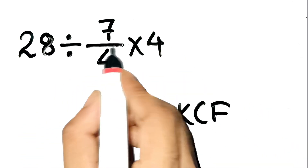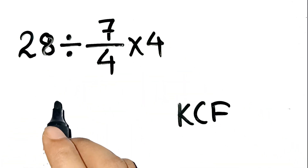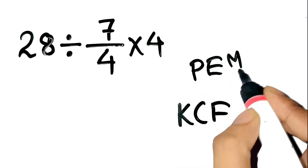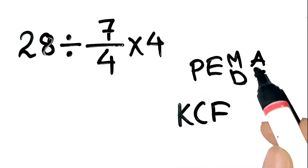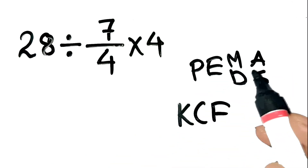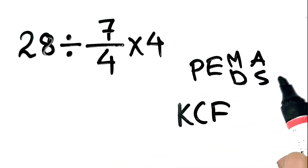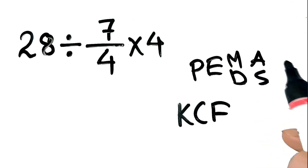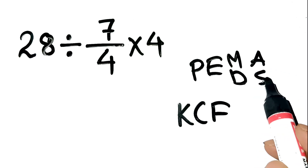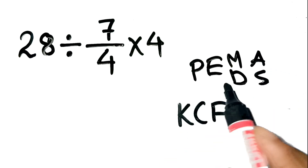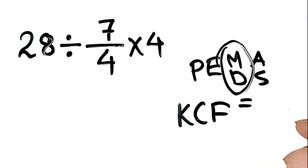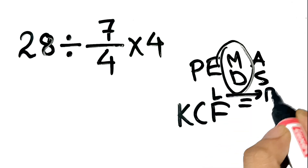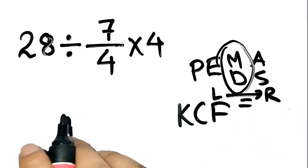Let's slow down and apply PEMDAS: Parentheses, Exponents, Multiplication, Division, Addition, Subtraction. Multiplication and division have equal priority, so we work from left to right.